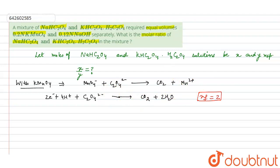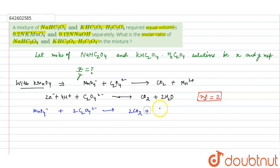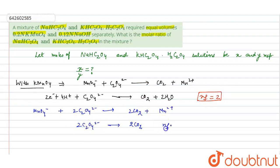When MnO₄⁻ reacts with KHC₂O₄·H₂C₂O₄, it contains two C₂O₄²⁻ ions — one from each part — so it forms two moles of CO₂ and one mole of Mn²⁺. For one C₂O₄²⁻ oxidized to CO₂, the n-factor is 2. Therefore, for two C₂O₄²⁻ oxidized to two CO₂, the n-factor is 4.